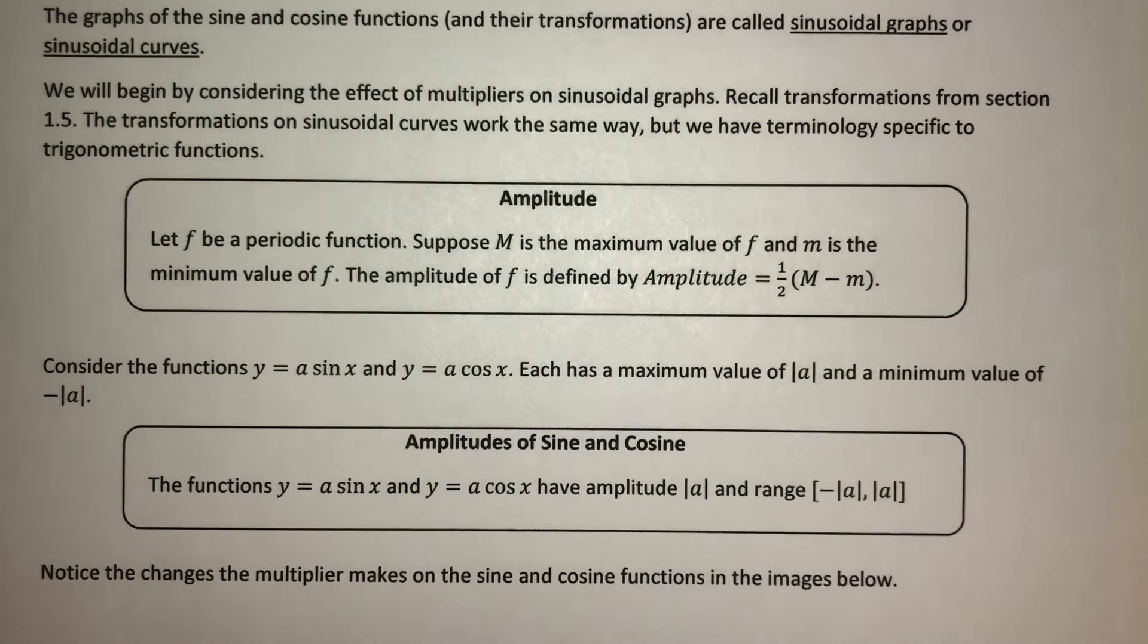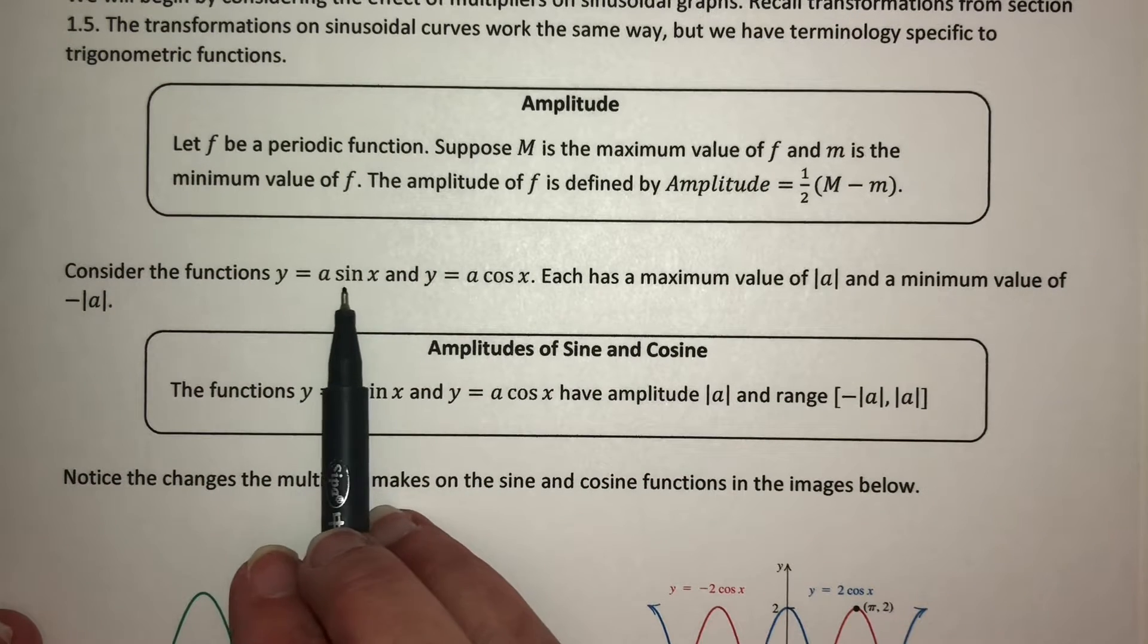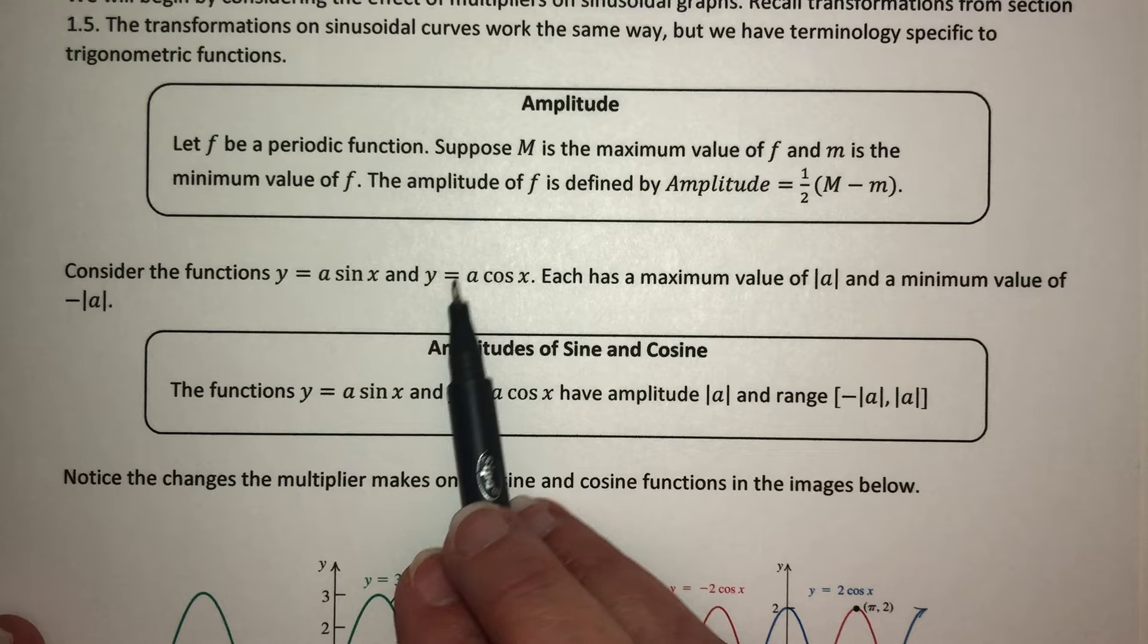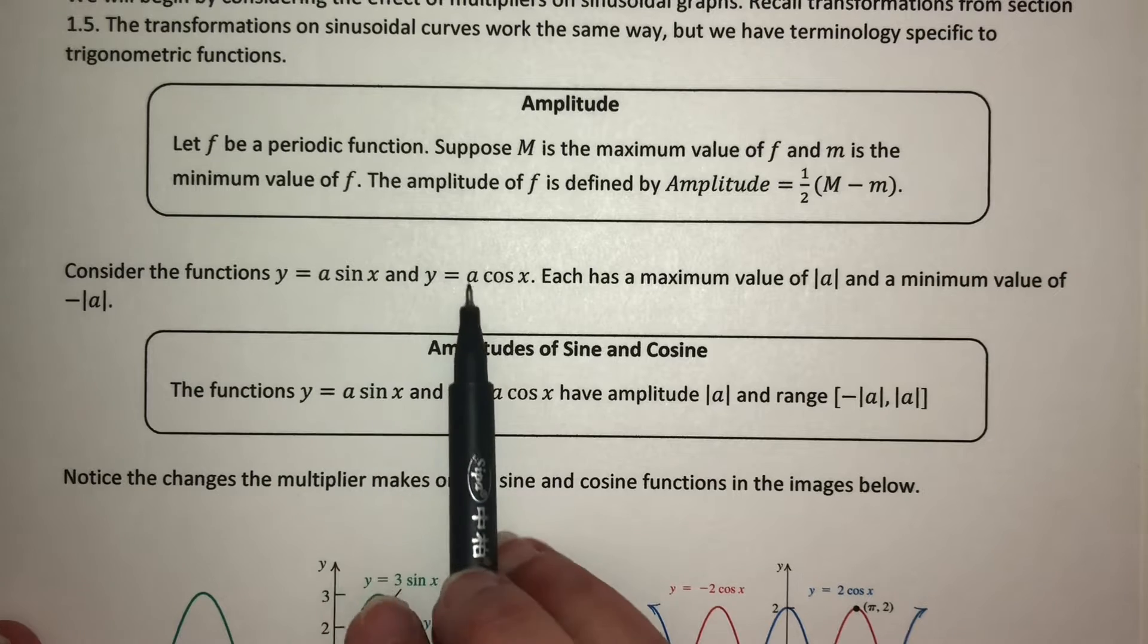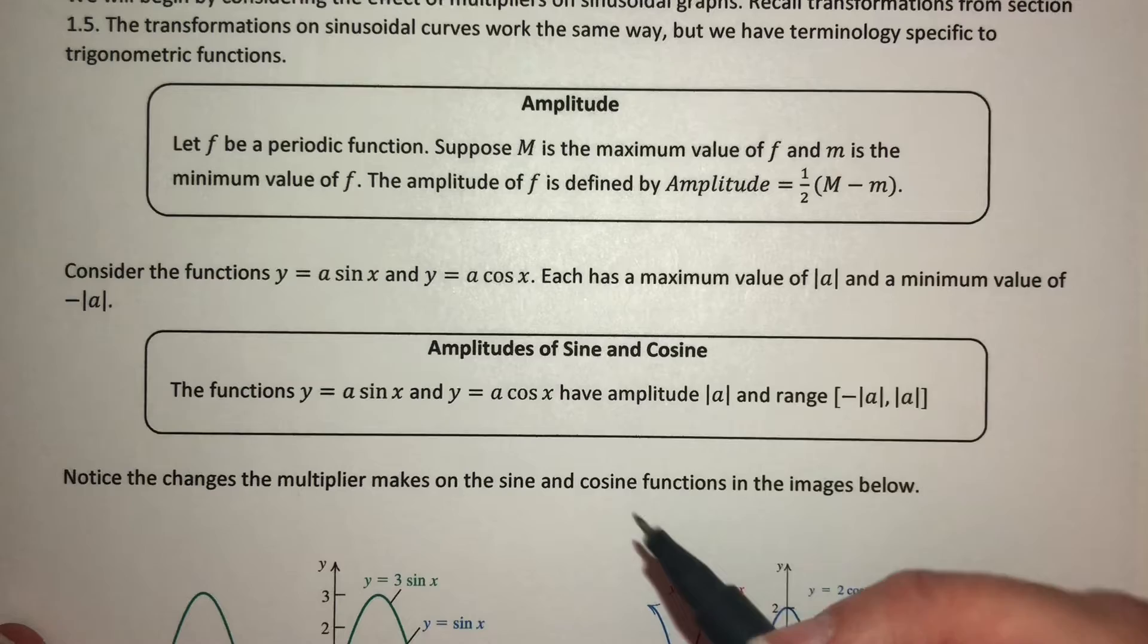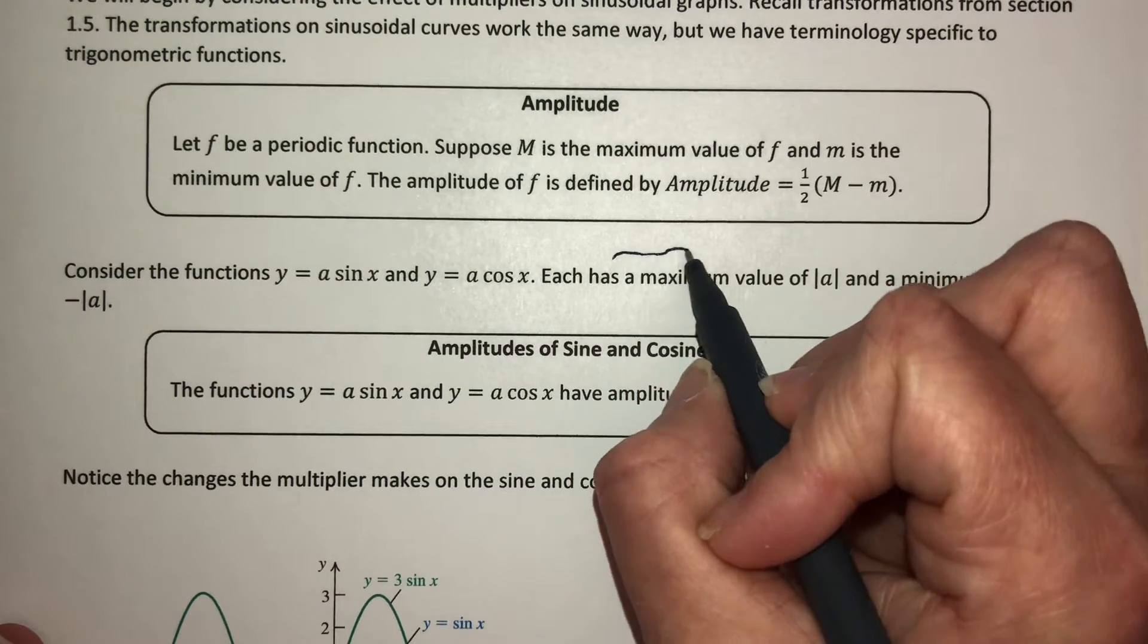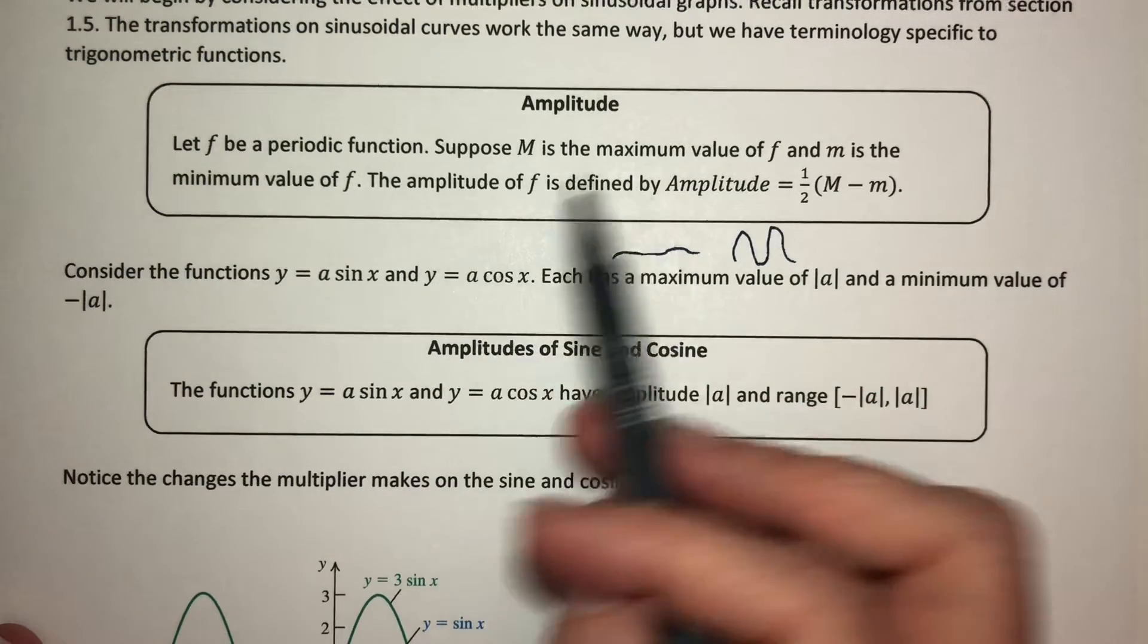It's going to talk about how high this thing goes on either side of where it starts to repeat. Now let's talk about y = a sin x and y = a cos x. Back in section 1.5, we learned that a multiplier in front of a function changes it vertically, a vertical stretch or compression. Basically, the amplitude is that same idea. Is it going to flatten our graph out, or is it going to make it go up and down really fast?